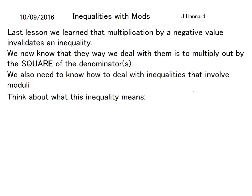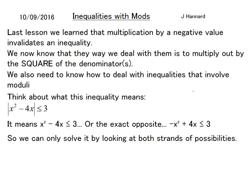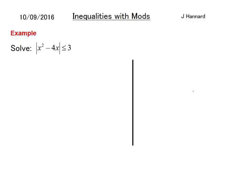So think about what this inequality means. The mod of X squared minus 4X is less than or equal to 3. Well in layman's terms what that means is that X squared minus 4X is less than 3 or the exact opposite which is minus X squared plus 4X is less than or equal to 3. So we can only solve it by looking at both strands of possibilities.